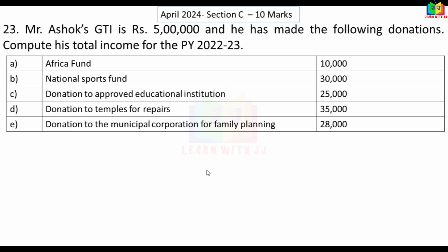We will claim the Africa Fund and the National Sports Fund under List A. List A gives 100% deduction with no qualifying limit. List C has a provision where the deductible amount is 10% of adjusted GTI or the actual amount, whichever is less.